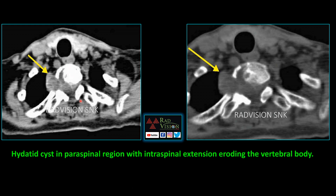Next case: there is a cystic lesion in the right paraspinal region extending through the neural foramina into the thecal sac with intraspinal extension. There is also erosion of the vertebra. This is hydatidosis in the paraspinal region with intraspinal extension.